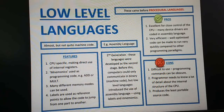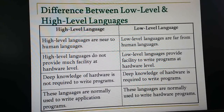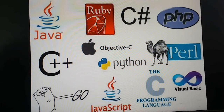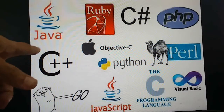High-level languages are near to human languages, like English. High-level languages do not provide much facility at the hardware level because they are machine-independent. Deep knowledge of hardware is not required to write programs. These languages are normally used to write application programs. Examples of high-level languages include Java, C, C++, Ruby, PHP, Visual Basic, and JavaScript.